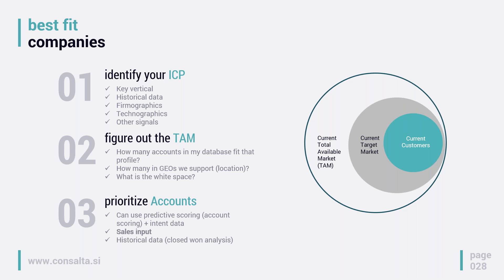Once you identify your ICP, it's also important to figure out the total available market — how many accounts in your database fit that profile. Can we expand to other geographies to leverage the ABM engine in a broader scope? What is the white space — companies around us that we're neglecting due to poor past results? Prioritize accounts using predictive scoring. Account scoring is a must in account-based marketing, and more broadly in performance marketing, because if you cannot score the quality of a lead, you cannot measure the success of your campaign.